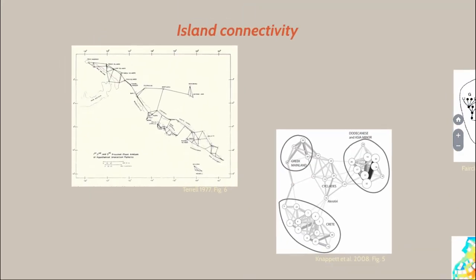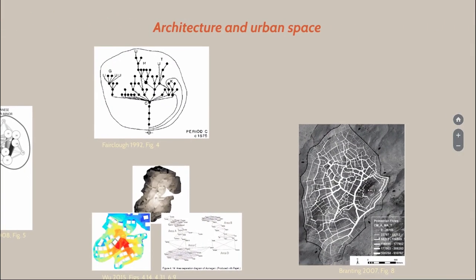Another prominent field of application is island connectivity. For example, John Terrell back in 1977 theorized that Pacific Islanders had a limited ability to interact with one another—they tended to interact preferentially with the three nearest island communities. Also in urban studies and architecture, we use techniques like access analysis to represent urban spaces or house spaces and the connections between them, which is basically graph theory and network science.